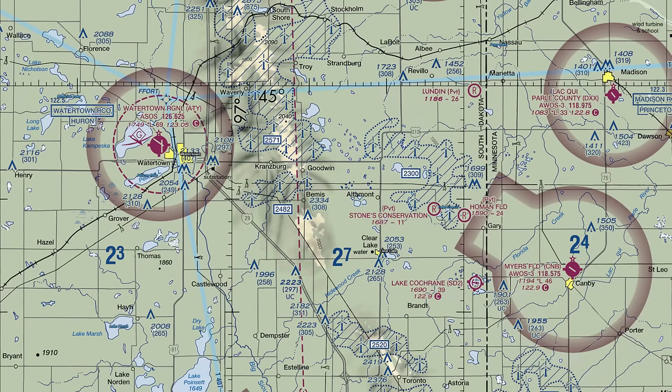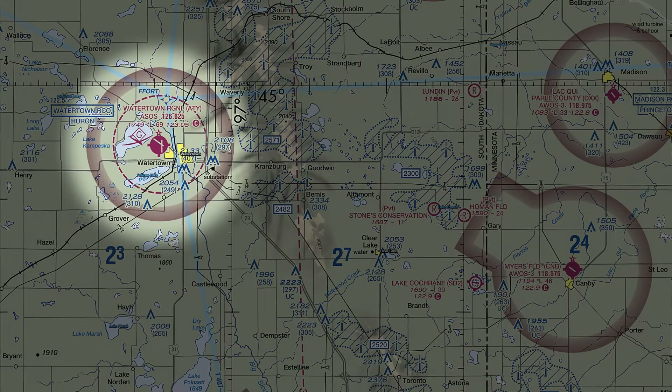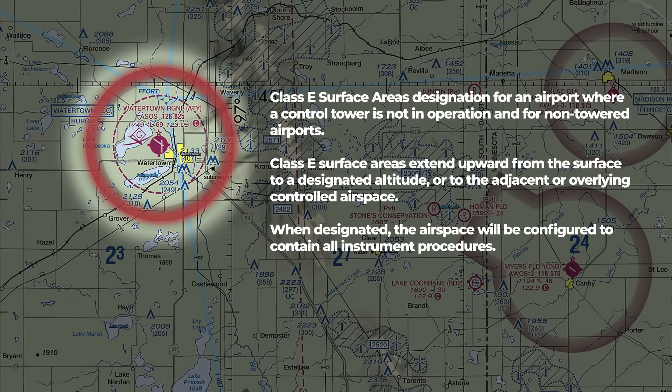Next up to discuss are Class Echo surface areas. These are really important because they provide an area of controlled airspace for terminal operations that don't have a control tower. For example, here's an uncontrolled airport in Class Golf airspace, but we can see the Class Echo surface area designated here. These areas extend from the surface up to a specified altitude, often used for IFR departures, arrivals, and instrument approach procedures. They're meant to protect the airspace to ensure aircraft can safely transition between uncontrolled and controlled environments. You can actually look on the chart and see the arrival corridor where an ILS approach comes in.